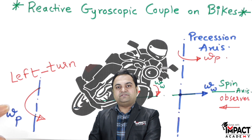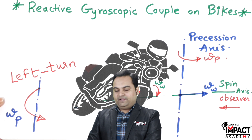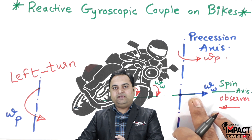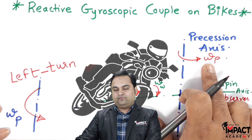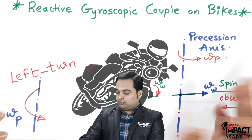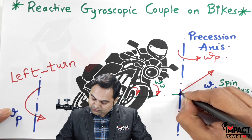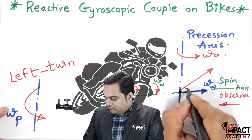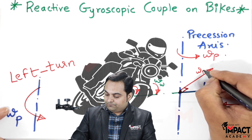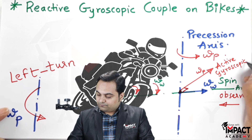There are two kinds of rotation happening simultaneously on two different axes, so there will be a gyroscopic effect acting on this bike. After getting the angular velocity of the wheel as a vector, I need to rotate this vector by 90 degrees in the direction of omega_p. I am showing this 90-degree rotation in a plane, and the resulting vector represents omega_p — this is called the active gyroscopic couple.